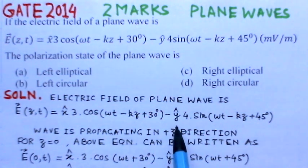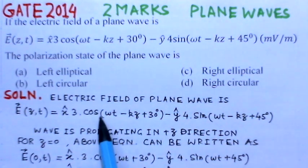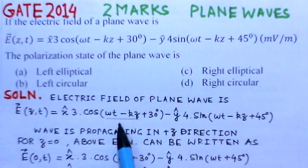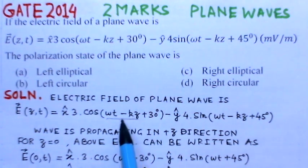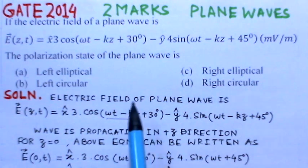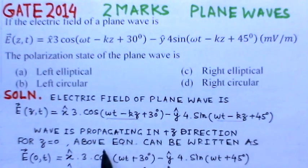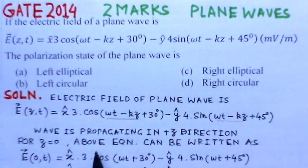Now, looking at the direction of wave propagation: the factor (ωt − kz) in both components tells us the wave is propagating in the plus Z direction. We can confirm this from both terms — both contain (ωt − kz), so propagation is in the +Z direction.